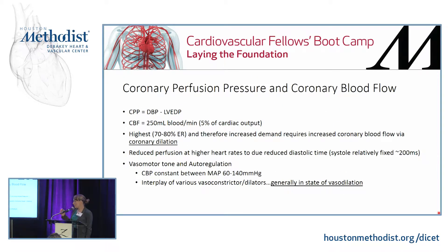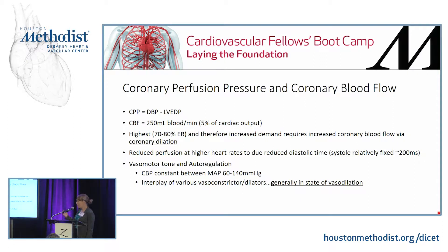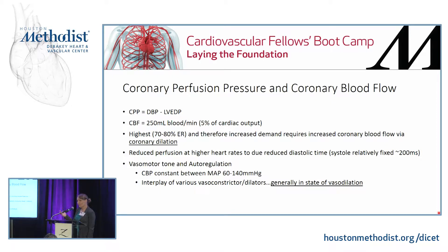The heart takes about 5% of our cardiac output but is a very high and efficient extractor of oxygen from hemoglobin. Practically speaking, coronary sinus catheters with retrograde cardioplegia — it's very obvious to the surgeon if they're in the coronary sinus by the color of the blood, and that's something we as anesthesiologists should be involved in as well. The extraction ratio is about 70 to 80%, so that's very dark blood. Also important: reduced perfusion at higher heart rates is due to reduced diastolic time, so tachycardia is an offender for diastolic filling.